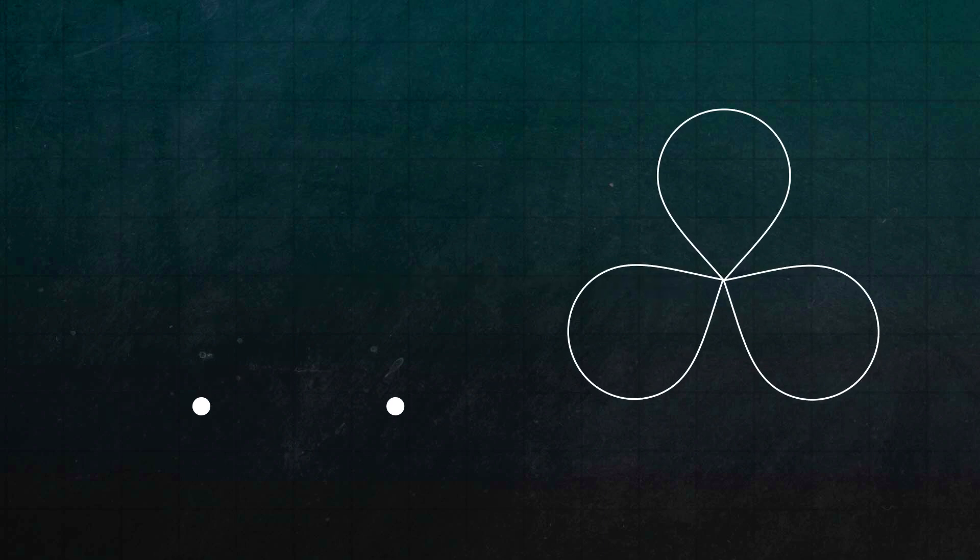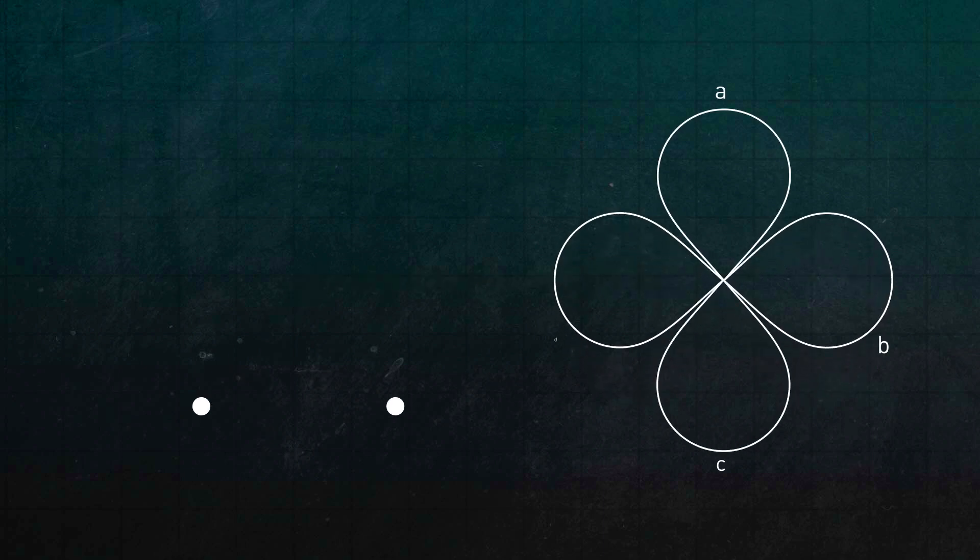But what happens if we multiply four loops, A, B, C, and D? Well, there are five different ways to put parentheses around four letters. So, there are five different ways to concatenate four loops, and none of them are equal because multiplication is not associative. But there are homotopies and hence paths between them.